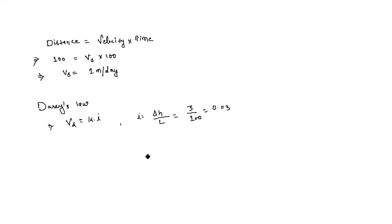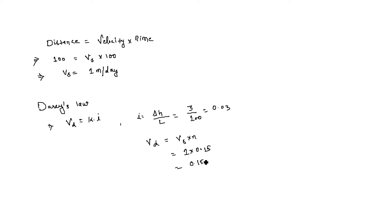There is a relationship between discharge velocity and seepage velocity: discharge velocity vd equals seepage velocity multiplied by porosity. The seepage velocity is 1 meter per day and porosity is 15%, so vd equals 1 times 0.15 = 0.15 meters per day.